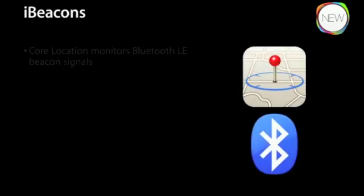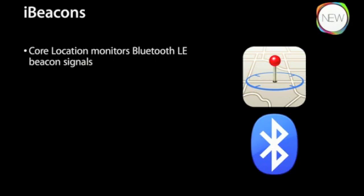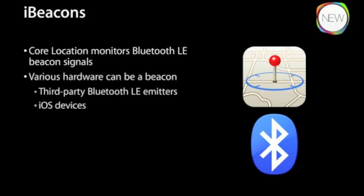A little bit about the technology. At the basis of this is Core Location monitoring Bluetooth LE signals. It can do region monitoring as well as ranging to detect distance. Region monitoring is typically when your app is in the background. For ranging, your app needs to be in the foreground — or you can do scan-on-wake, meaning when you wake your phone up, even if your app isn't running, Core Location can do a scan and bring up a notification. Beacons can be a lot of things — various hardware can act as a beacon; you can buy these third-party and program them to emit whatever Bluetooth signal. But also, your iOS devices can be beacons. Your iPads and iPhones with the new iOS 7 public SDK can be programmed to emit whatever signal you want, dynamically and programmatically.